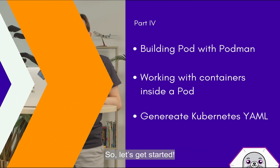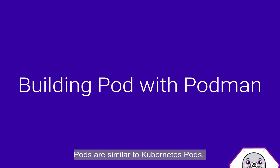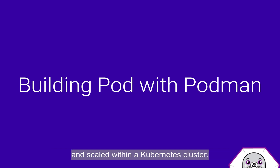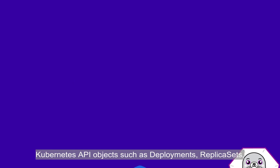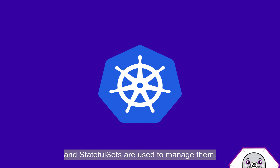So let's get started. Podman is a container engine that offers a remarkable feature of creating pods. Pods are similar to the Kubernetes pods. They provide a way for applications to be organized and scaled within a Kubernetes cluster. Kubernetes API objects such as deployments, replica sets, and stateful sets are used to manage them.